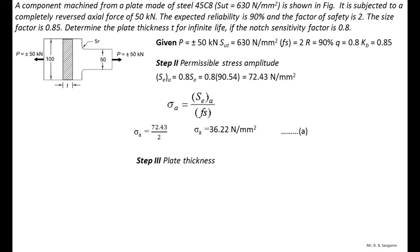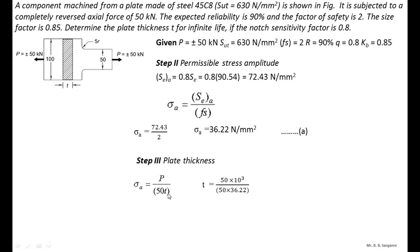Step 3: calculate the plate thickness t. The induced stress amplitude sigma_i = P / (50 × t), where P is the applied force of 50 kilo Newton. Setting sigma_i = 36.22 N/mm² and solving for t, the plate thickness t = 27.617 mm.